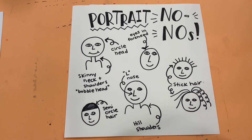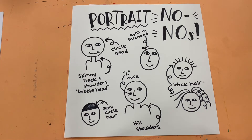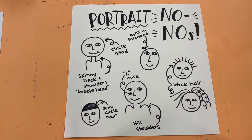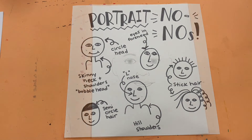We're also going to work on drawing hair. Drawing little stick hair or fountain hair that kind of comes from the top of your head in lines is not going to be the most realistic way to do that. Same with semicircle hair where you just kind of color a straight line across the forehead. I'm going to talk to you about all of these things and hopefully we will move past some of these portrait no-no's in the future.